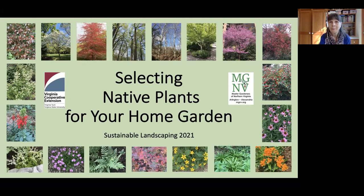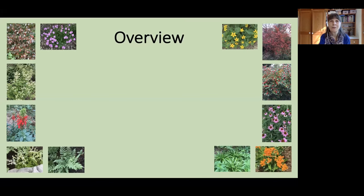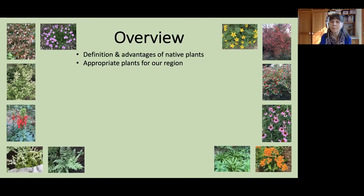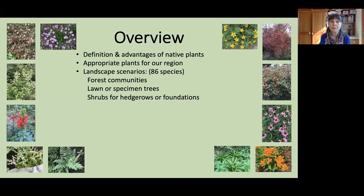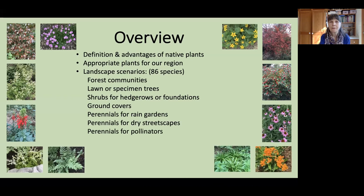To give you an overview of today's presentation: first I'll give you a definition of what I mean by native plants and talk about some of the advantages of using them. I'll discuss appropriate plants for our particular region. I'll also be presenting the plants in some landscape scenarios — we'll be looking at about 86 different species. Those landscape scenarios will include forest communities, lawn or specimen trees, shrubs for hedgerows or foundations, ground covers, and perennials for a variety of different settings. Interspersed with those scenarios, I'll be presenting some best management tips.